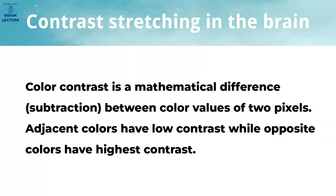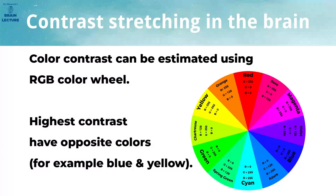When you are working with a color image, the contrast is called color contrast. Color contrast is a mathematical difference of two color values. Because color images have three or more color channels, the contrast can be easily estimated using the RGB color wheel. Opposite colors on the color wheel have the highest color contrast, while adjacent colors have the lowest. For example, the color blue has opposite color yellow, therefore blue and yellow have the highest color contrast.